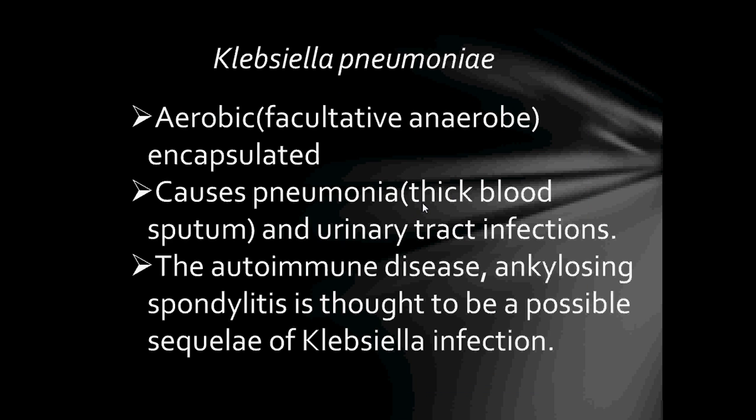Klebsiella pneumoniae are aerobic, encapsulated, and also facultative anaerobes. They cause pneumonia with thick bloody sputum and urinary tract infections. The autoimmune disease ankylosing spondylitis is thought to be a possible sequela of Klebsiella infection. Ankylosing spondylitis is a long-term arthritis — 'ankylos' meaning crooked, 'spondylos' meaning vertebrae, and 'itis' meaning inflammation. It affects the bones and joints at the base of the spine where it connects to the pelvis, causing the joints to become swollen and inflamed, and over time the affected spinal bones join together.